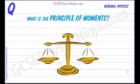The principle of moments tells us that if a body is in equilibrium, if it's balanced and at rest, then the sum of the clockwise turning forces about a pivot must equal the sum of the anticlockwise turning forces about the pivot. And that's the principle of moments.